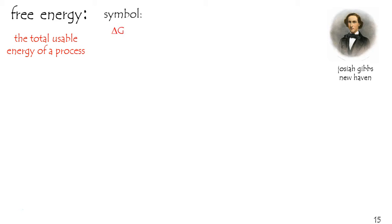He used the symbol G after himself, or delta G, meaning the change in the free energy, and he determined that when that value is negative, since it's the total usable energy of a process, you're going to have a spontaneous process. If that's a chemical reaction, it'll kick in.